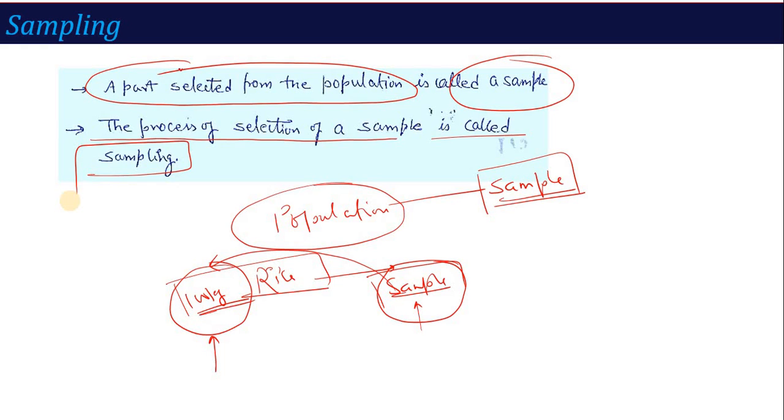Like if we're talking about weight of students in class - 40 students - we have not measured everyone. On an average we have taken 4-5 students, measured the weight, and realized what can be the average weight in the class. This is the concept of sampling.